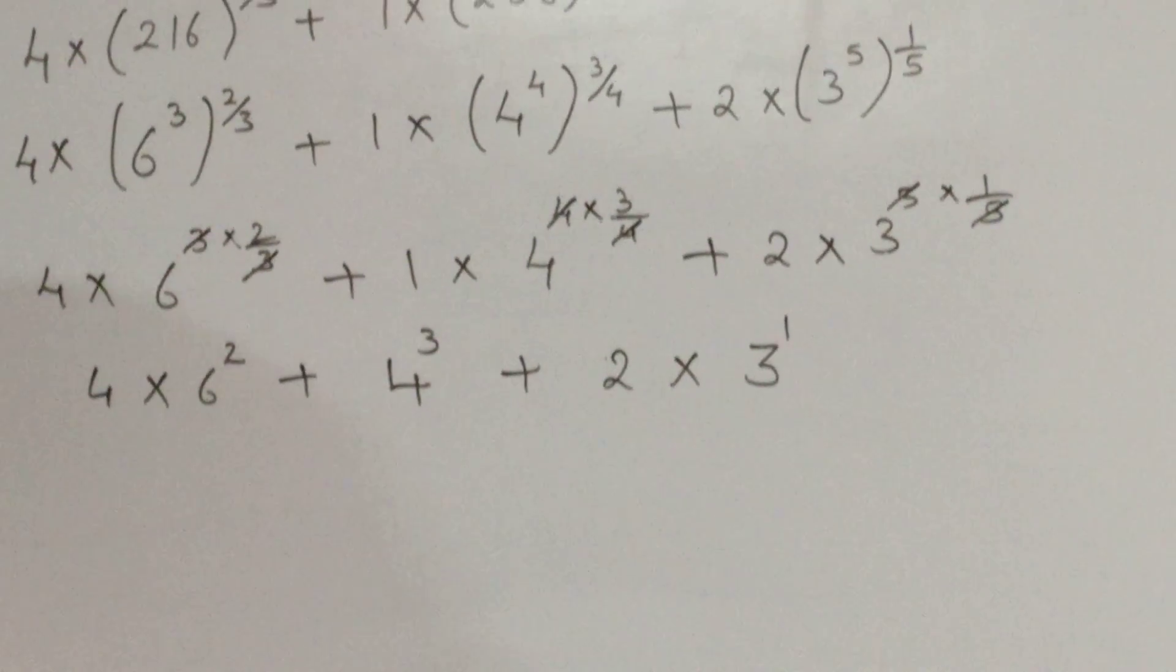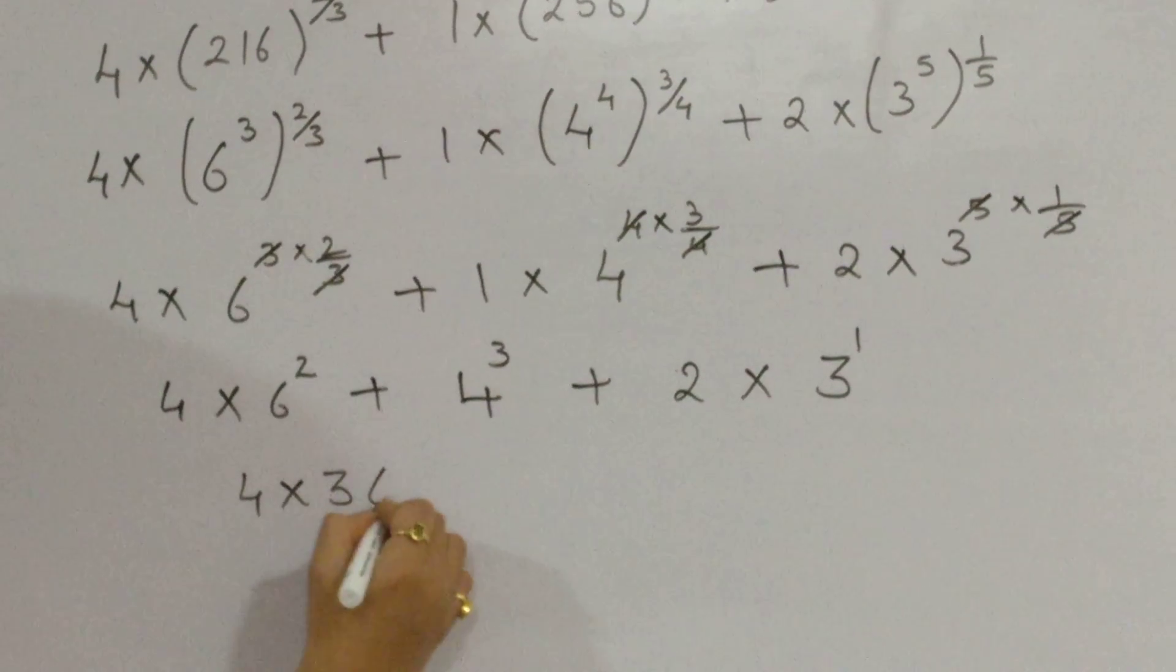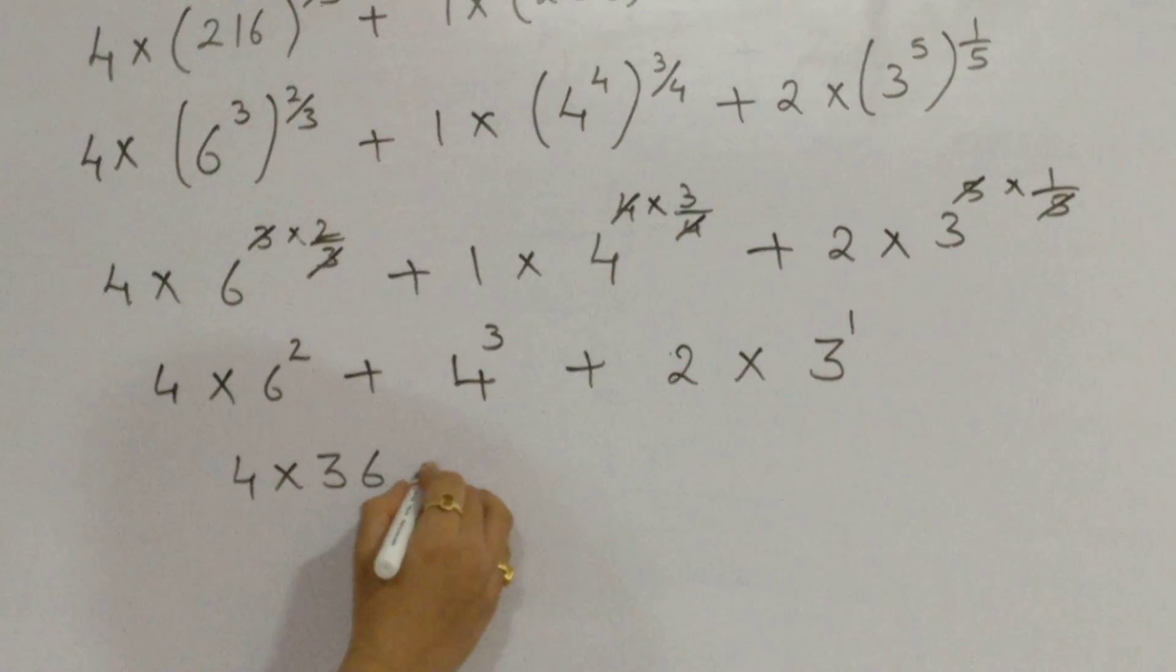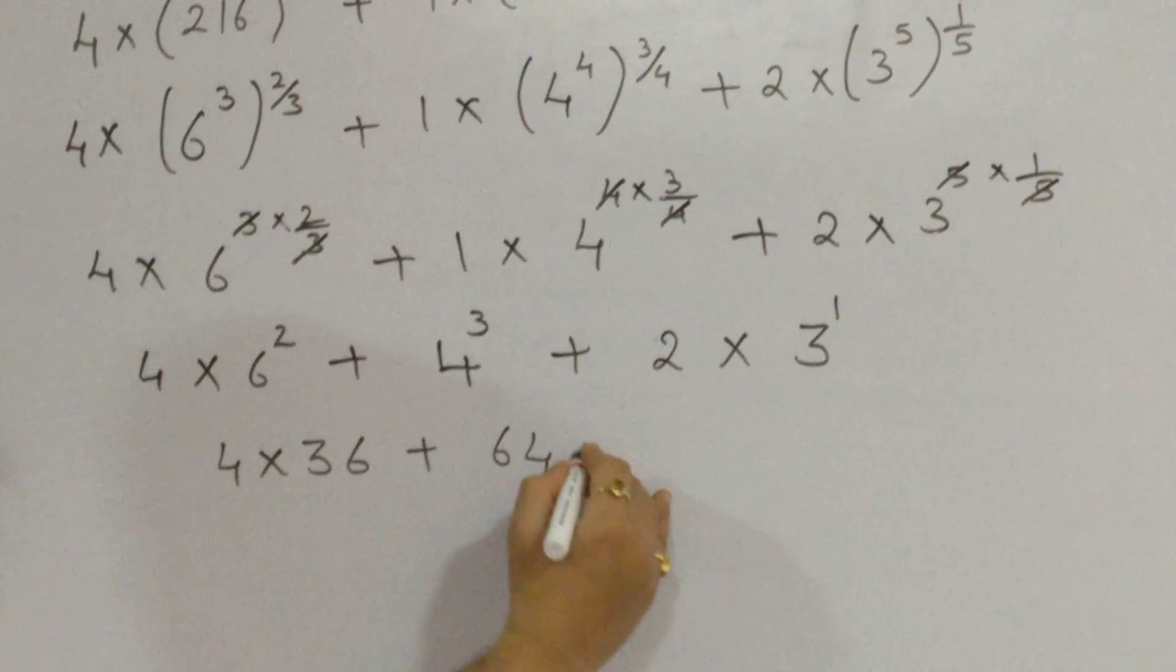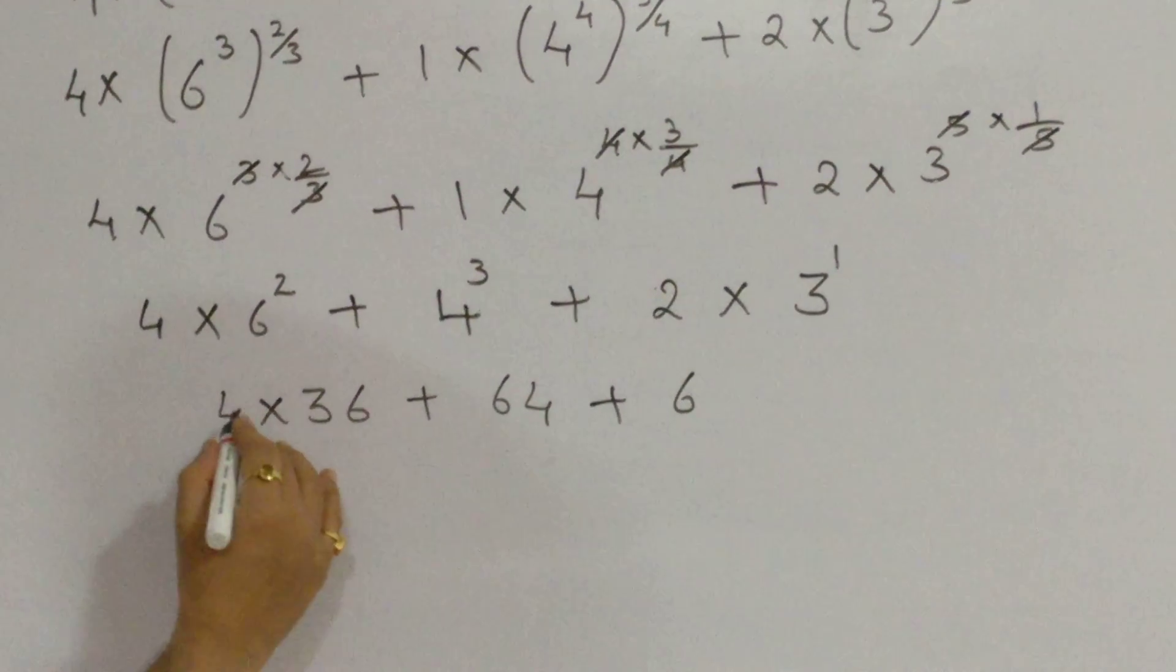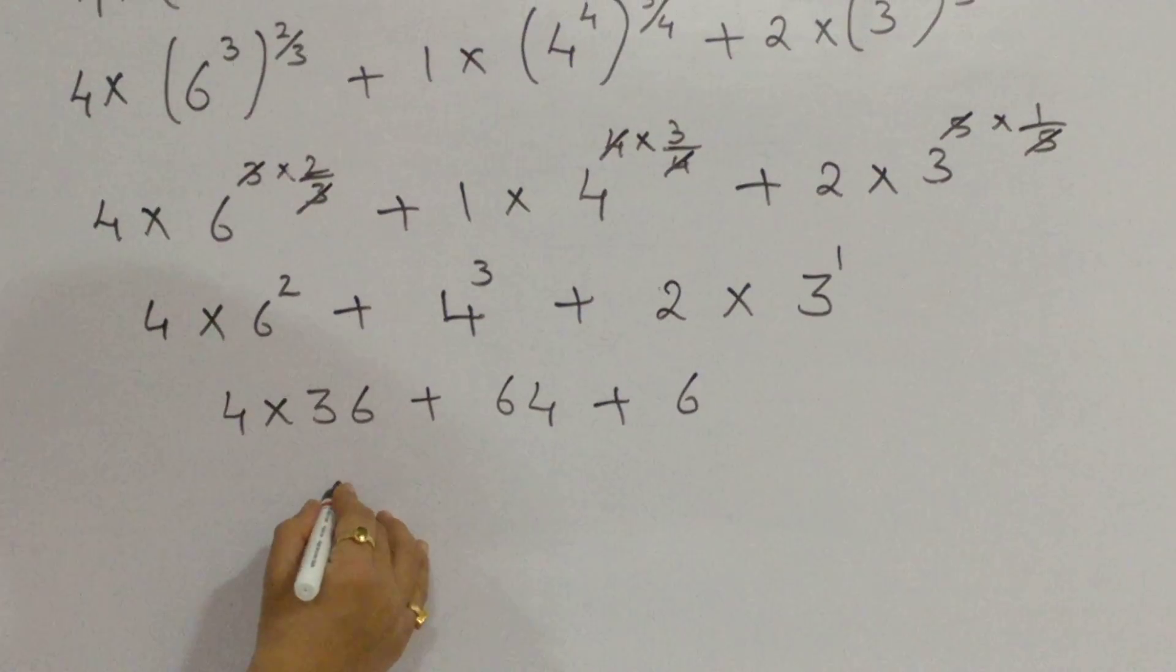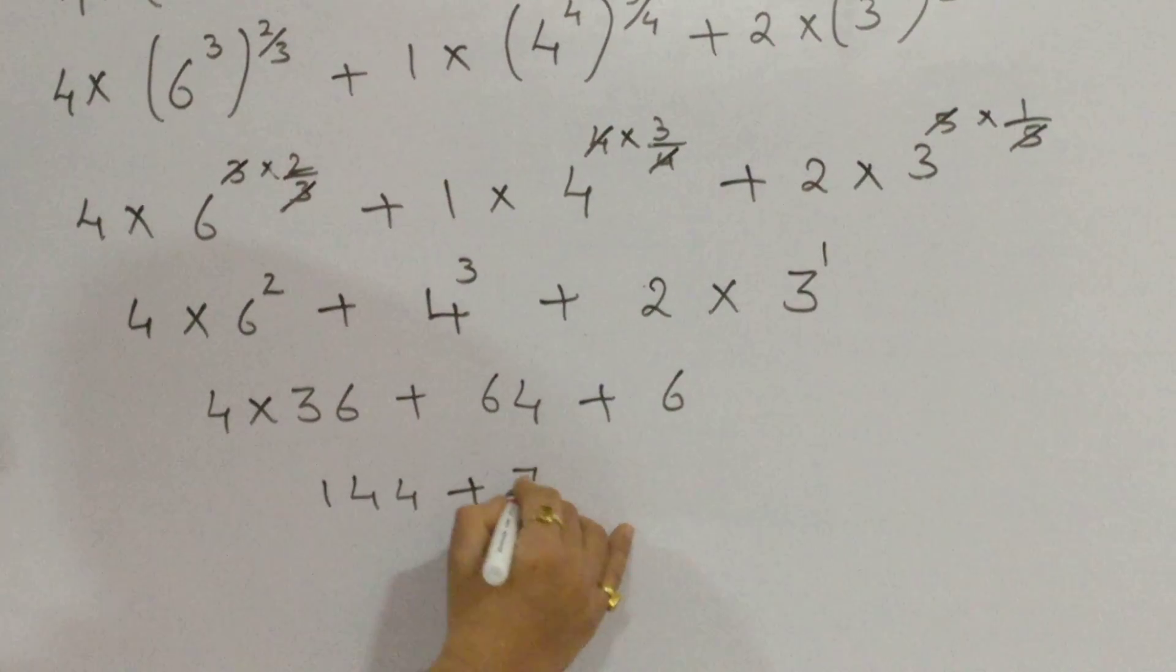4 into 36, plus 64, as 4 cube is 64, plus 2, 3 is 6. 36 into 4 is 144, plus 64 plus 6, 70.